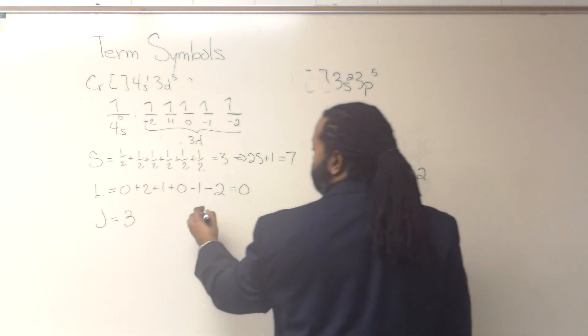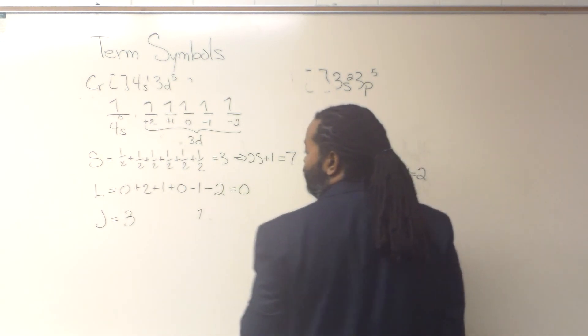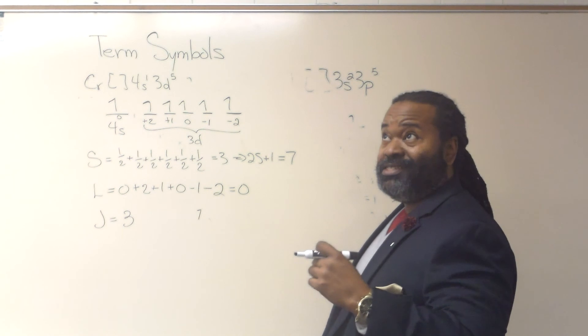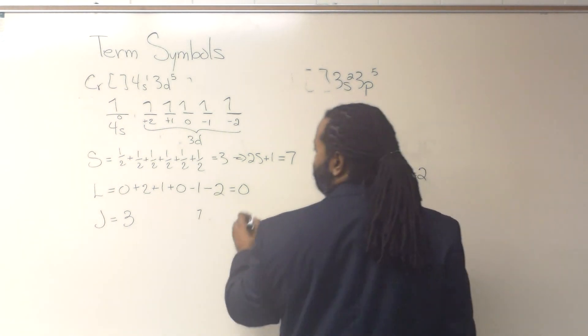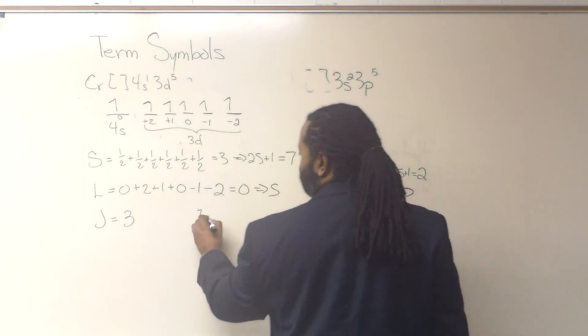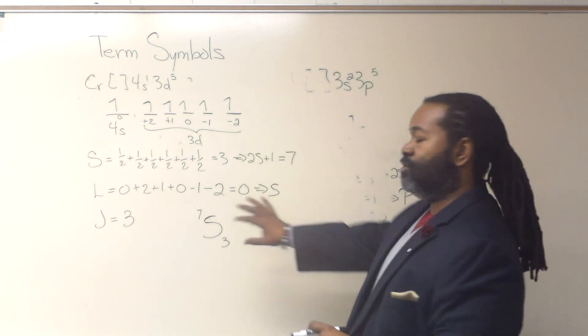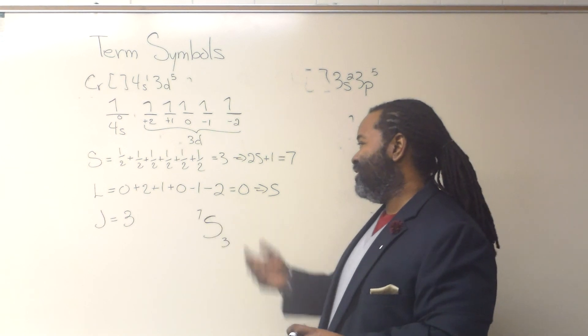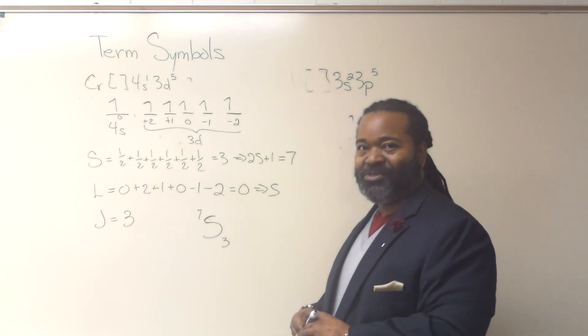And so now, because our multiplicity was 7, that is a septuplet, this 0 gives us an S, 3. And so the ground state term symbol for chromium is a septuplet S3.